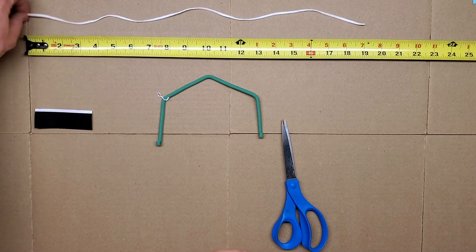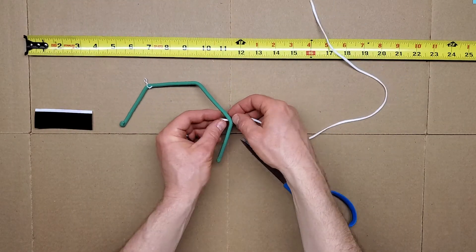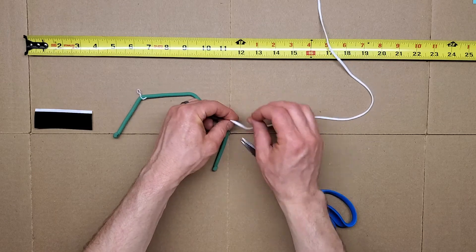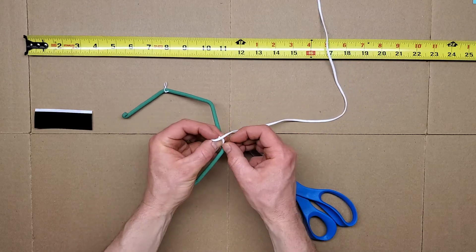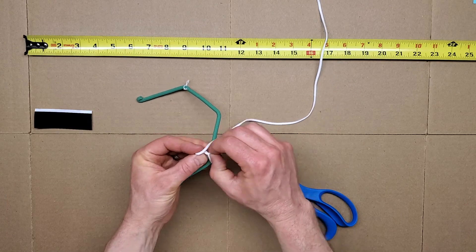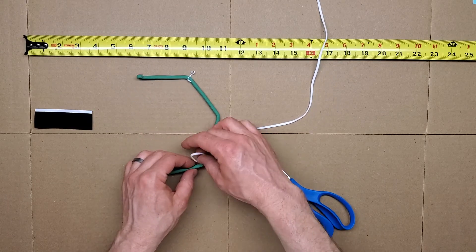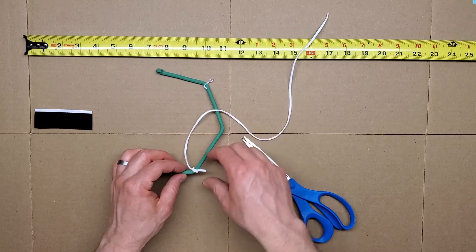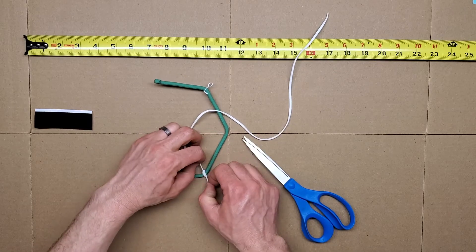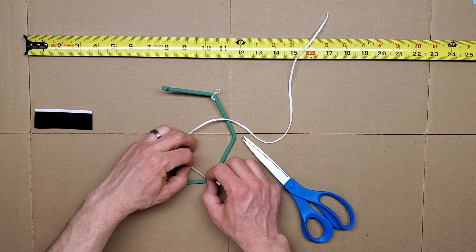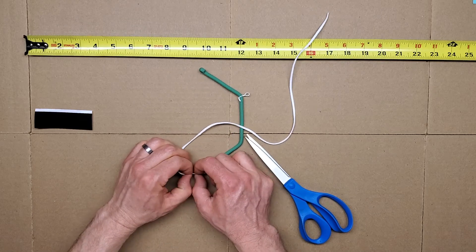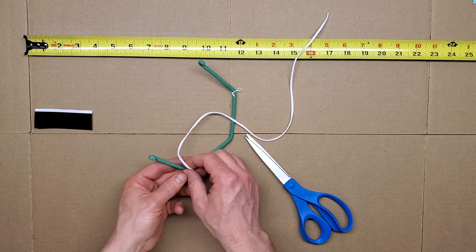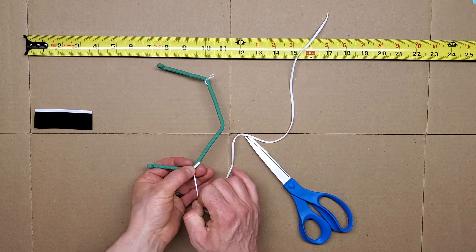Now we're going to take our elastic and tie it to the opposite bend over here. Just a simple knot there. Get that pretty tight. You never want that to come off.